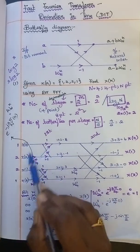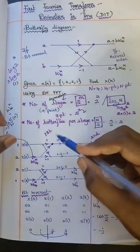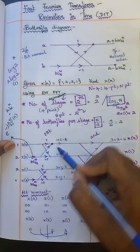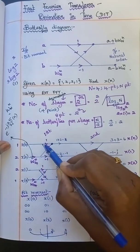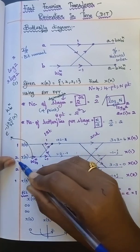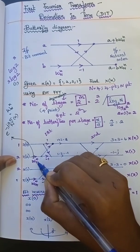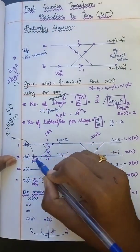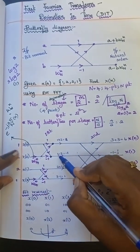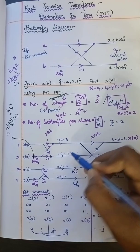Starting the butterfly with W4-0. This is just one butterfly. The formula is A plus B into WNK. Here, 1 plus 2 into W4-0. Since W4-0 equals e to the power 0, which is 1, we get 1 plus 2 equals 3. The lower output: 1 minus 2 into W4-0, which is 2 into minus 1, so minus 2 plus 1 equals minus 1.